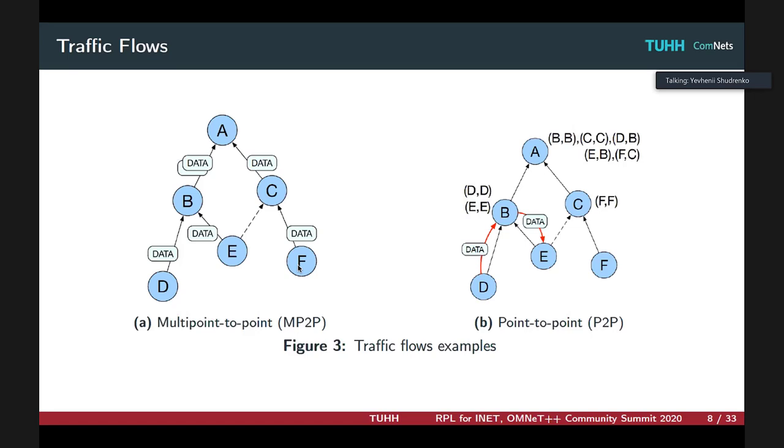Here are typical examples of multipoint-to-point or point-to-point traffic flows that may be used in RPL enabled networks. Essentially, data is forwarded upwards to the sink, or in point-to-point scenario it may be transported downwards, but for that we need a shared or common ancestor node that has the routing information to downward packet.